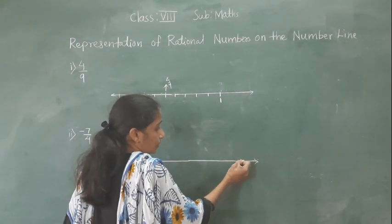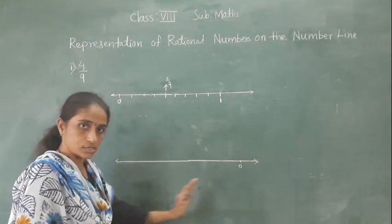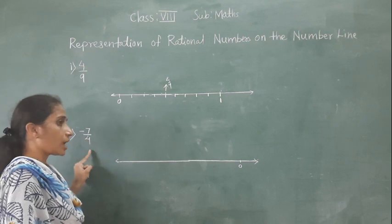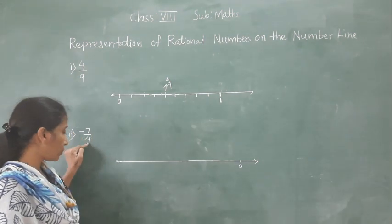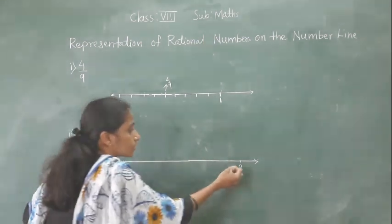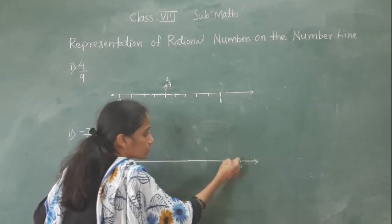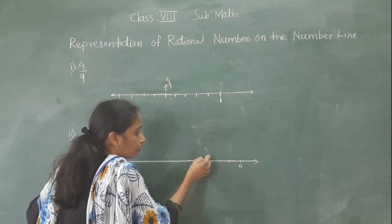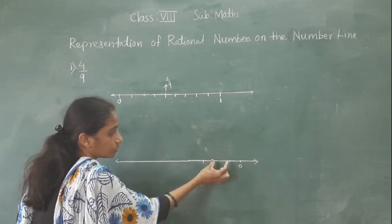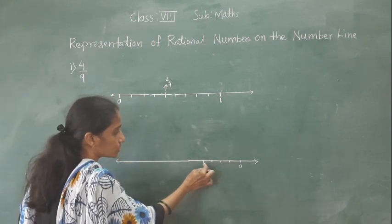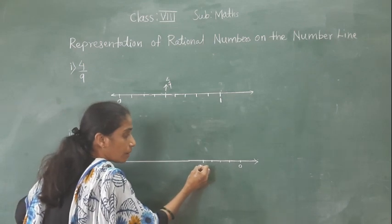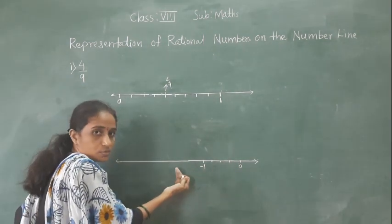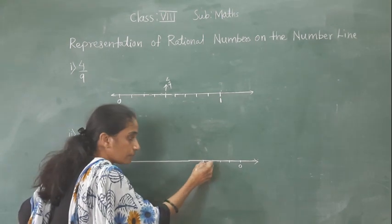Now, what are we going to do? I will write 0 here and write numbers to the left of 0. Total parts are 4 — denominator is 4 — so we have to make 4 equal parts: 1, 2, 3, 4. You can use a scale and take proper equal measurements. The 4th part from 0 going left will be minus 1, since these numbers are left of 0 — negative integers. So it will come minus 1.